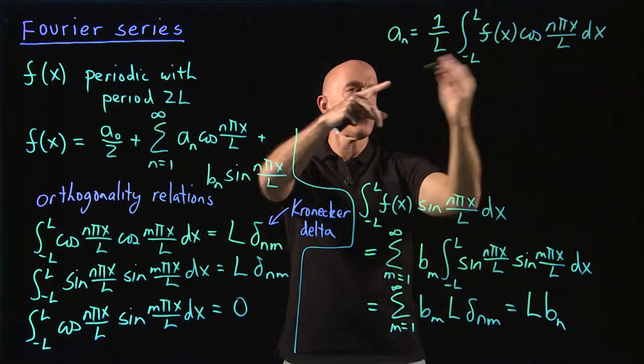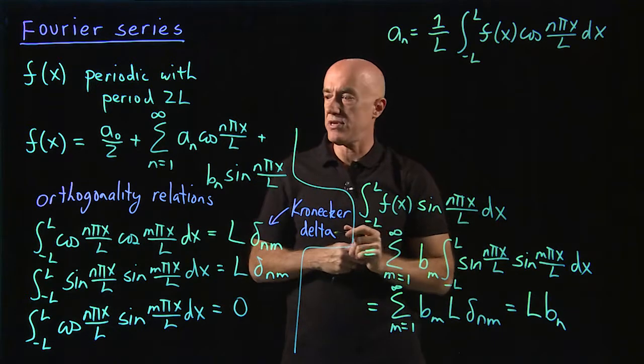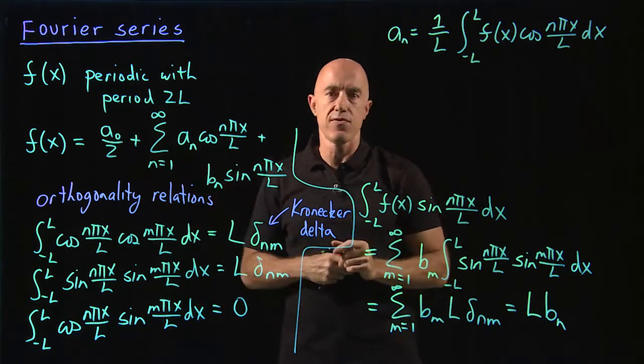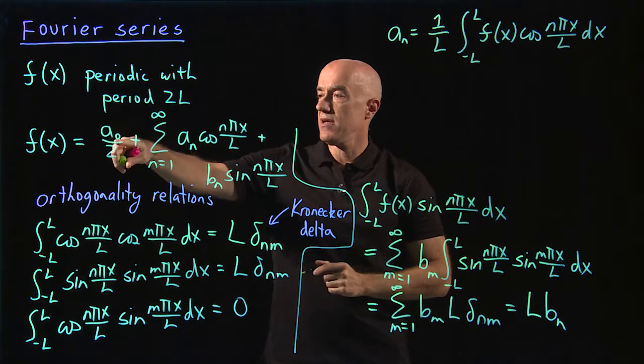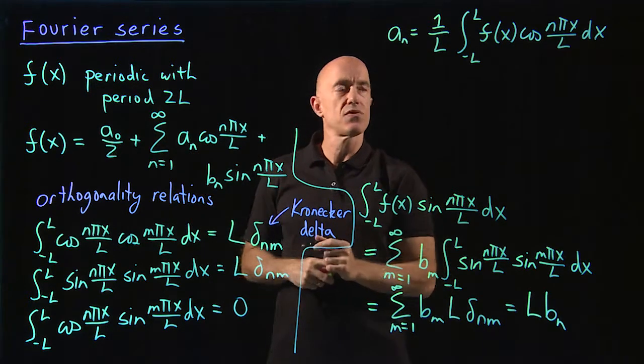So a sub n's are given by this integration. And that's also true for a zero, the first a coefficient. Because that's why we stuck the two there, so that this formula would also work.